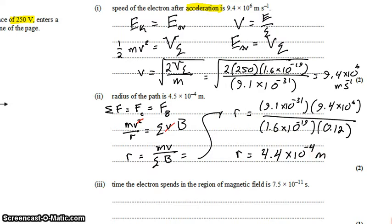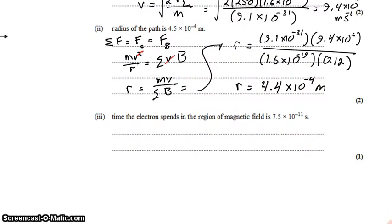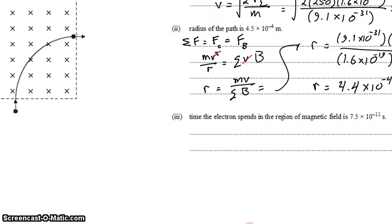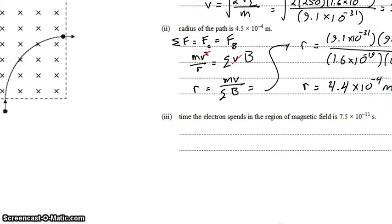We'll punch that into our calculator, and I got 4.4 times 10 to the negative 4 meters. All right, there's our radius. Last but not least, we want to find the time that the electron spends in the region of the magnetic field. Show that it's 7.5 times 10 to the negative 11 seconds.